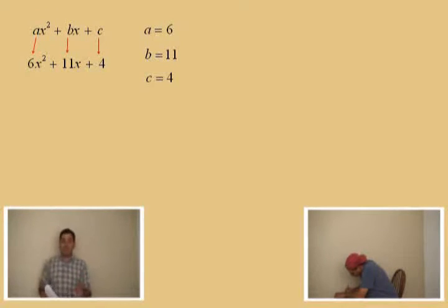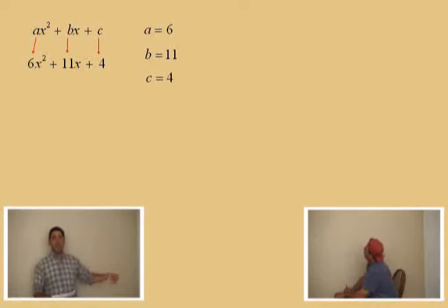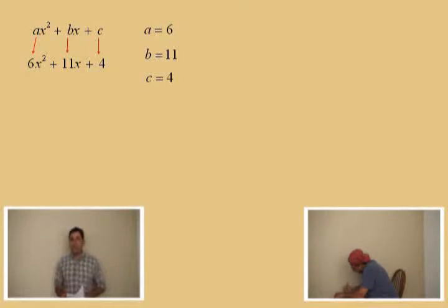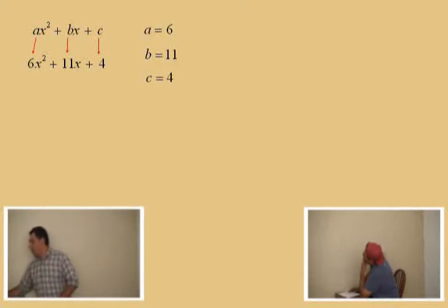Now, because it's 6x squared plus 11x, b is a plus 11, a positive 11. And because at the end there's a plus 4, the c is a plus 4. If it had been a subtract 4 at the end, that c would have been a negative 4. But because we have the plus 4, it's a positive 4 there.